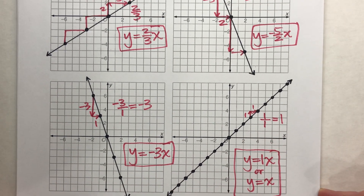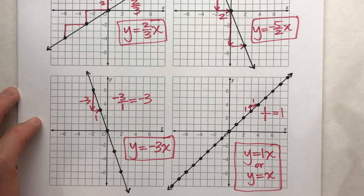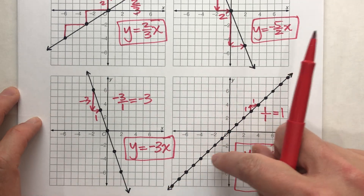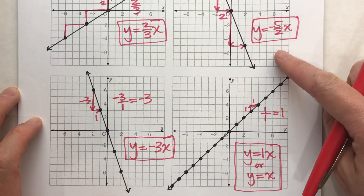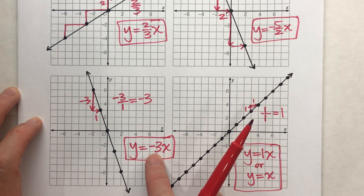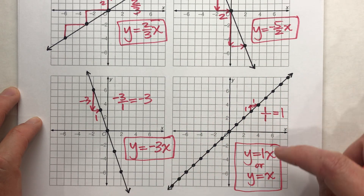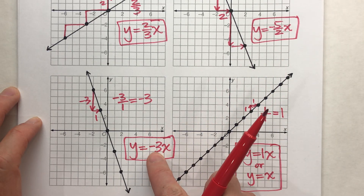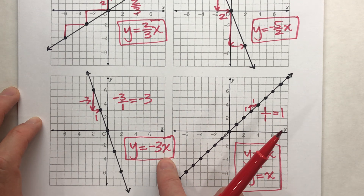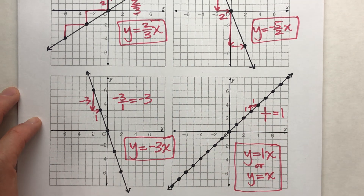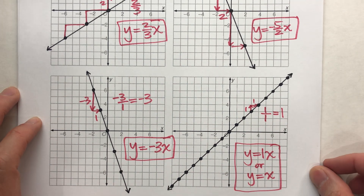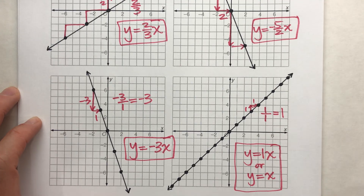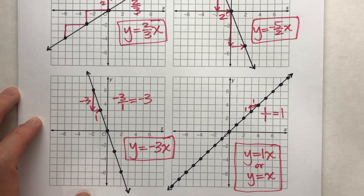The key to this is making sure that you're moving from left to right. Find your rise and your run. Write it as a fraction, or if you can simplify it to a whole number, do that. Your equation is y equals your slope times x. Hopefully this video was helpful — if it was, please hit that like button and subscribe. Good luck on your math, and I will see you next time.